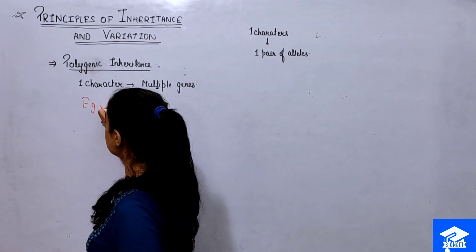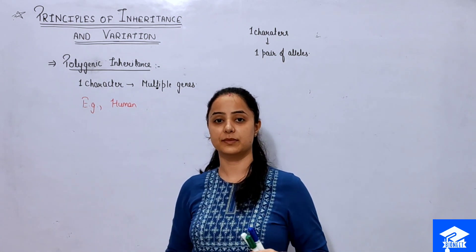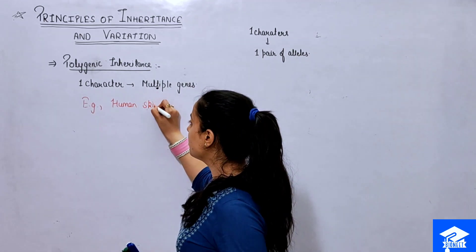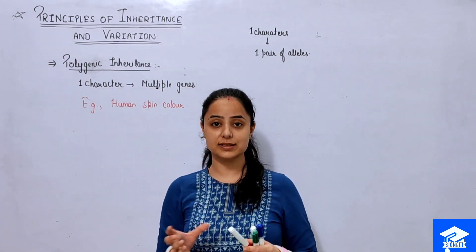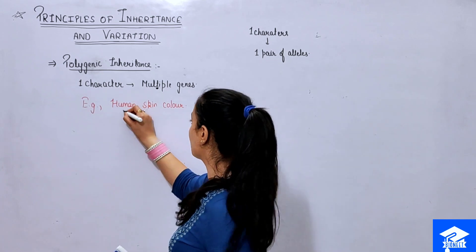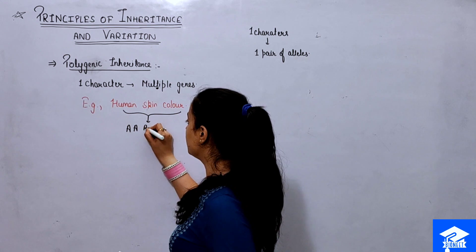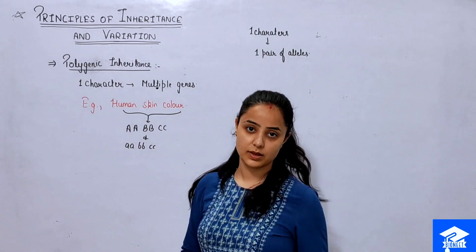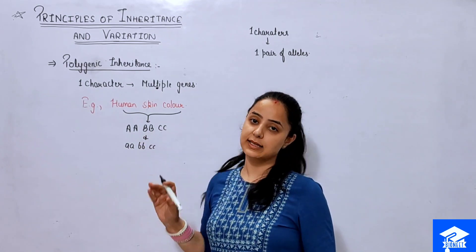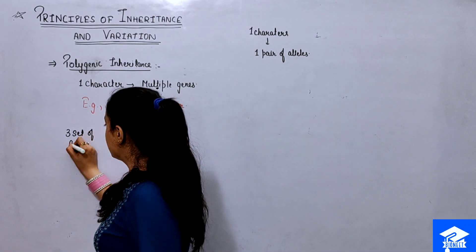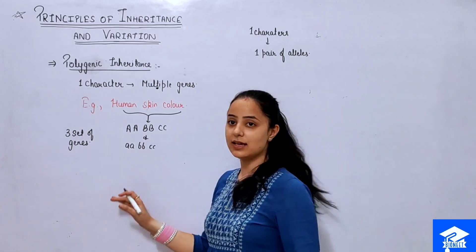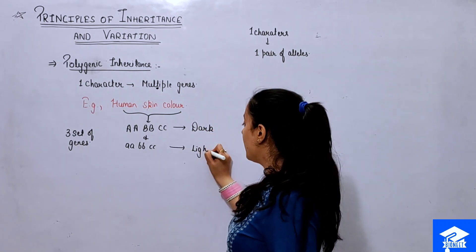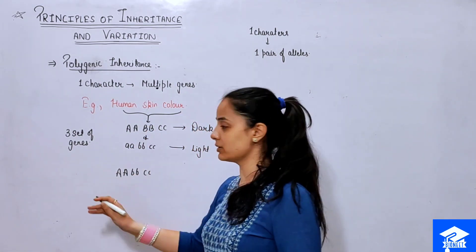The NCERT example for polygenic inheritance is human skin color. There are so many skin tones — light, dark, and everything in between — that we cannot simply say one is dominant and one is recessive. Human skin color is controlled by three pairs of genes: capital A/small a, capital B/small b, and capital C/small c. If purely dominant, skin color will be dark; if purely recessive, skin color will be light.